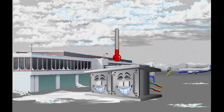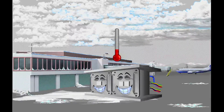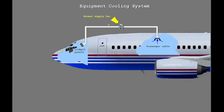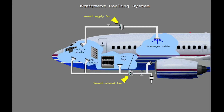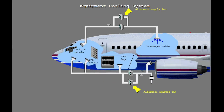The equipment cooling system keeps the temperature of the cockpit instruments and the electronic equipment in the E&E bay at less than the operating limits. The system has a normal supply fan and a normal exhaust fan. Also, there is an alternate supply fan and an alternate exhaust fan.